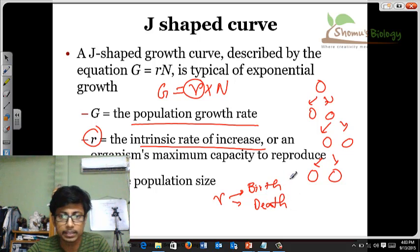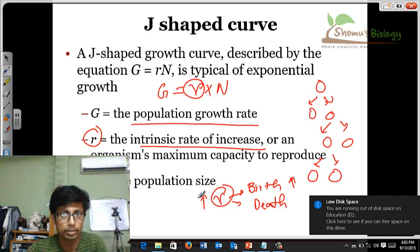Obviously, if the birth rate is higher than the death rate, in that case the population will rise because the intrinsic growth rate is more than one. Now, if the death rate is higher than birth rate, the r or intrinsic growth will be less. So the population will not grow, it will go to decline.